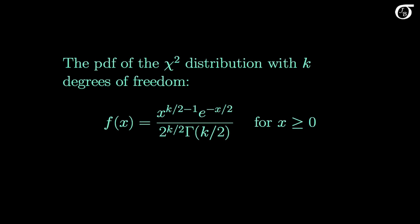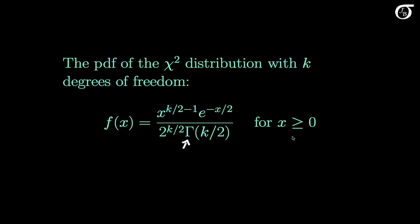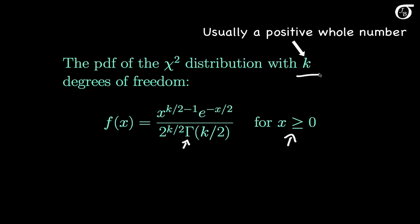Here's the probability density function of the chi-square distribution with k degrees of freedom. This is the gamma function — look that up if you need to know more about it. Note that a random variable with a chi-square distribution can only take on non-negative values, which makes sense since we're squaring standard normal random variables and adding them up. Here k, the degrees of freedom, is usually a positive whole number in practice, but in this PDF there's nothing stopping it from being a non-integer value. The mean of a chi-square distribution is equal to its degrees of freedom, equal to k, and the variance is equal to double the degrees of freedom, or 2k.